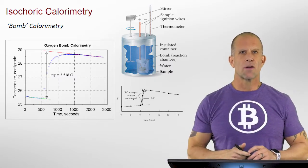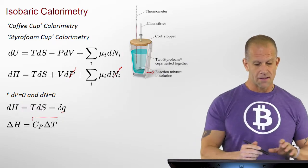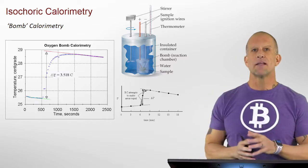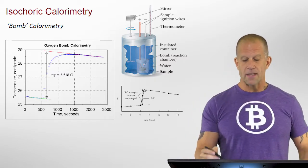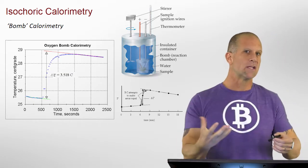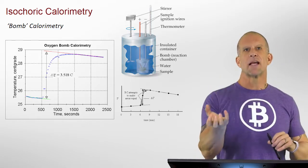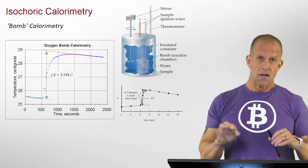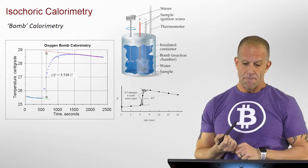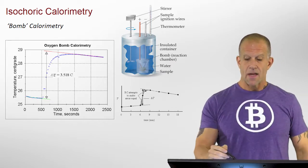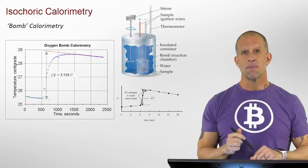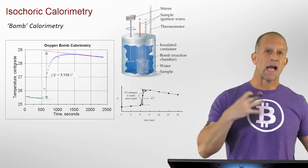Moving on, instead of constant pressure you can work under constant volume. Under constant volume, the work term goes away and you look directly at the internal energy of the system. This is called bomb calorimetry because you're loading something — most commonly with an oxygen bomb — so you're looking directly at combustion. This is common in the food and pharmaceutical industries. You put a sample in, load oxygen at high pressure under constant volume conditions, then ignite it to hopefully completely combust the sample. You can do this with a known material to get the heat capacity of the whole system.